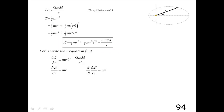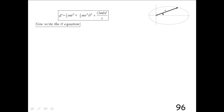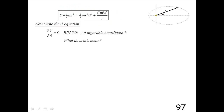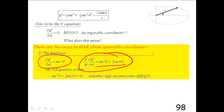We can write the r equation — you did this on an exam recently. We set the time derivative of the generalized momentum equal to the generalized force and get that equation. Then we write the θ equation based on this Lagrangian. Since there are no θ terms in the Lagrangian, θ is an ignorable coordinate. You can take the derivative of the Lagrangian with respect to the velocity to get the generalized momentum, which is really the angular momentum, then take the time derivative and set it equal to the generalized force, which is zero.